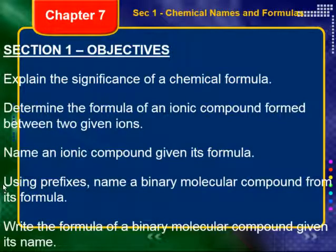Using prefixes, name a binary molecular compound from its formula. So if I give you a formula, you can tell that it is covalently bonded — that's a molecular compound — and you're going to use a prefix system. And lastly, write the formula for a binary molecular compound given its name. Molecular means covalently bonded, those are two non-metals. Binary just means there's two of them — you have two things bonded together.